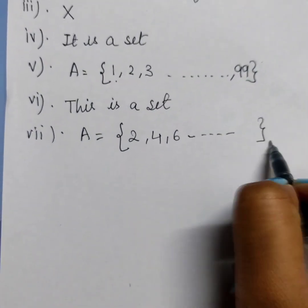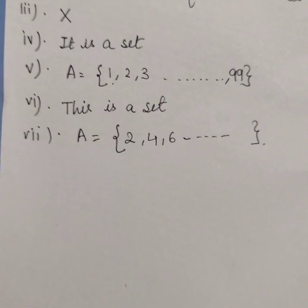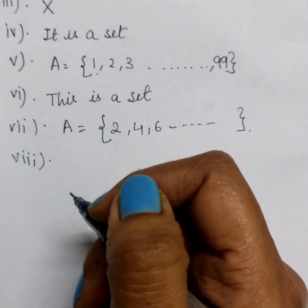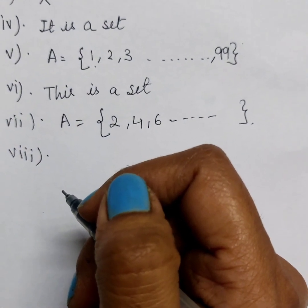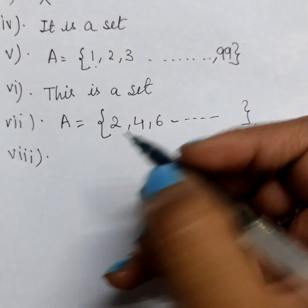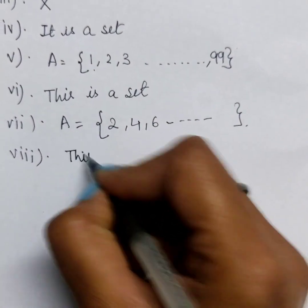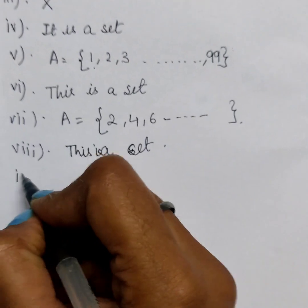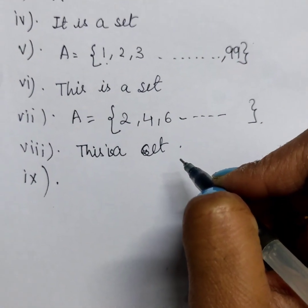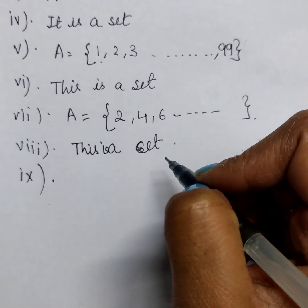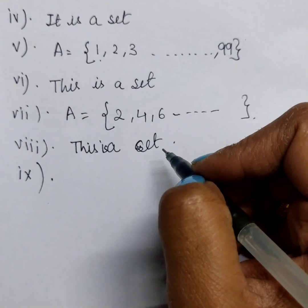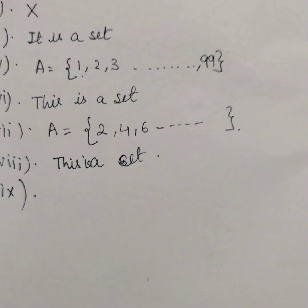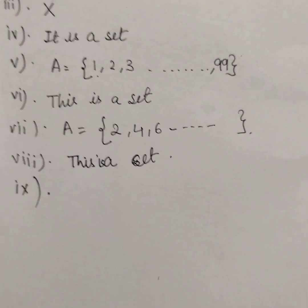2, 4, 6, 8, 10 — these are all the even integers. The eighth one: the collection of questions in this chapter — this is also a set. For the ninth one: a collection of most dangerous animals of the world — this is not well-defined because 'most dangerous' is not a clear term, so this is not a set.